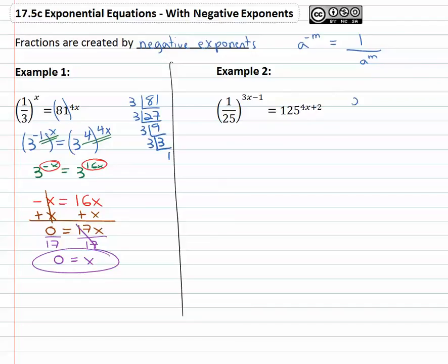The twenty five has a prime factorization, divide by five, five times, five once. The twenty five is five squared, but we have to create the fraction with a negative exponent. We will say that's five to the negative two power, keeping the three x minus one outside.